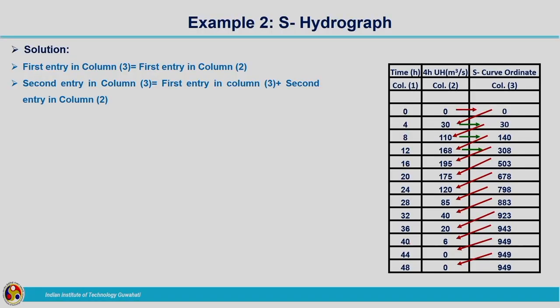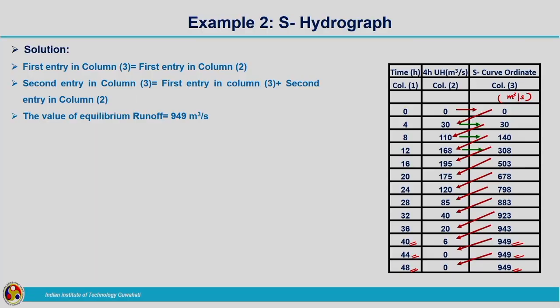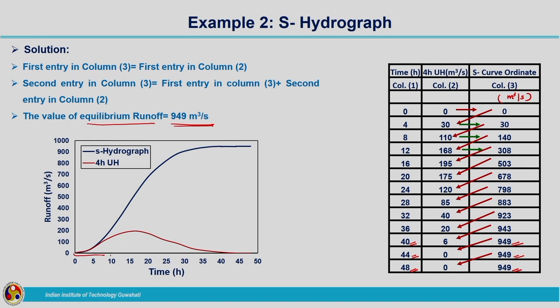The second part of the question was: what is the equilibrium discharge? Looking at the curve, at t equal to 40 hours the ordinate of the S hydrograph is 949 cubic meters per second. Corresponding to the 44th hour it is also 949, and at the 48th hour again the same value. As time increases, there is no change in the ordinate of the S hydrograph, which represents the equilibrium discharge. In this example, the value of equilibrium discharge is 949 cubic meters per second. As the time base of the unit hydrograph is reached, around 44 hours, the S hydrograph has attained the equilibrium discharge.